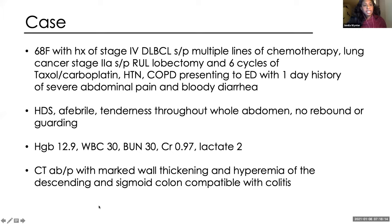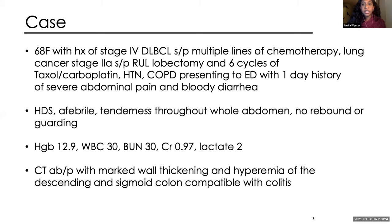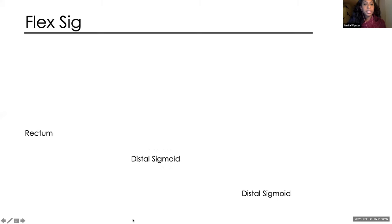She ultimately got a CT, and it showed marked wall thickening and hyperemia of the descending and sigmoid colon, compatible with colitis. We were consulted for endoscopic evaluation and ultimately did a flex sig, given the localization of disease.